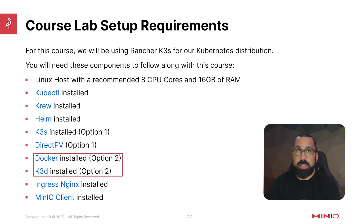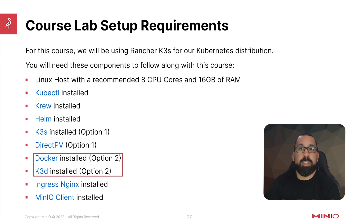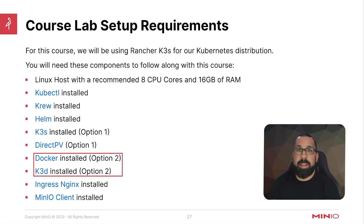Option two is to install Docker and then run K3D, which is K3S running inside Docker containers. That is able to simulate a much more robust cluster because you can have multiple nodes — both server and agent nodes — running on a single host, though they are all just Docker containers. So that's option two; choose your own path and use what works best for you.